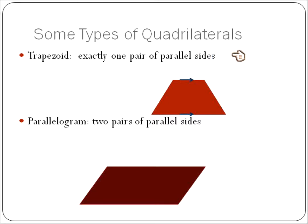Let's look at specific characteristics or properties of different types of quadrilaterals. A trapezoid is a quadrilateral with exactly one pair of parallel sides. I marked them with these arrows here. These sides are parallel.